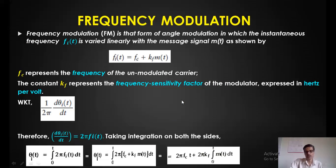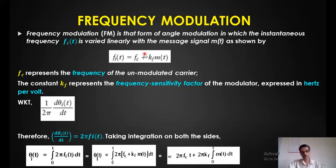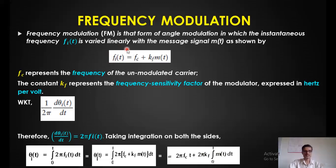The second type is frequency modulation, where we change the frequency of the carrier proportional to the amplitude of the message signal. The instantaneous frequency is given by fi(t) = fc + kf·m(t), where fc is the frequency of the unmodulated carrier and kf is the frequency sensitivity factor measured in hertz per volt. As the message signal amplitude changes, the instantaneous frequency also changes.